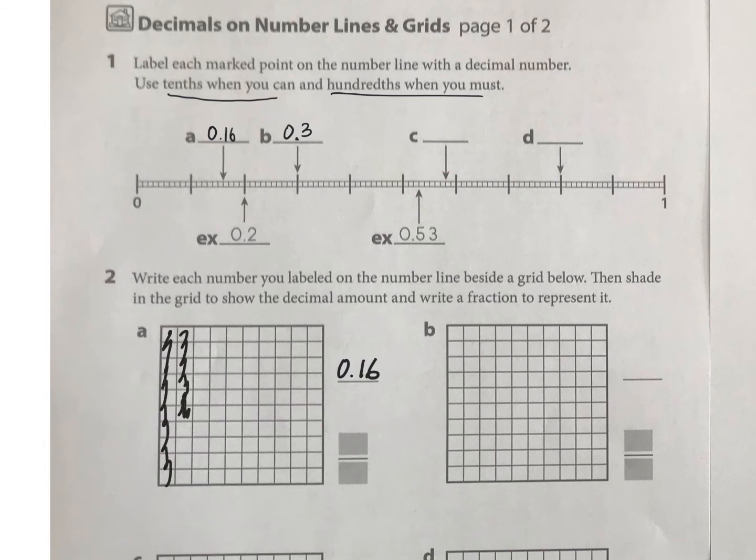And 16 hundredths would look like that, and as a fraction you would write it like this. And then over here you're going to write B, which is 3 tenths, the same one we had here, and fill it in.